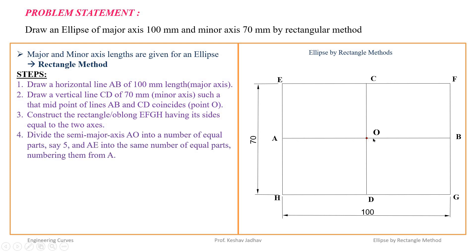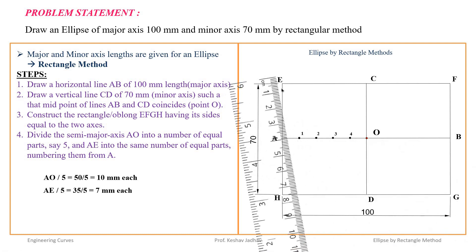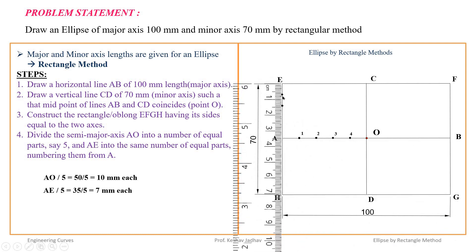Next, divide the semi-major axis AO into a number of equal parts, and divide segment AE into the same number of equal parts, giving numbering starting from AE. The major axis length is 100 mm, so semi-major axis AO equals 50 mm. We can easily divide it into 5 parts at 10 mm each. AE is equal to 35 mm, so we divide it into 5 parts at 7 mm each using a scale.